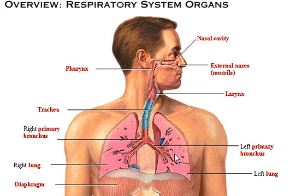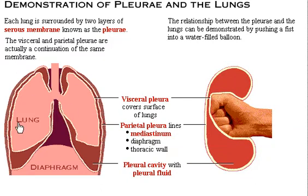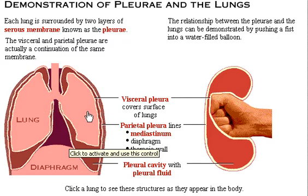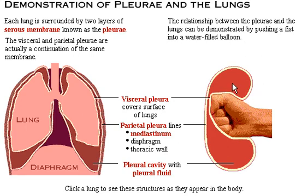We're going to look in a little bit more detail at what actually happens inside the lungs and how the gas exchange occurs. Here we're going to demonstrate the relationship of the pleura that surrounds the lungs. Each lung is surrounded by two layers of the serous membrane known as the pleura. We can demonstrate this relationship using a fist pushed against a water-filled balloon — the balloon represents the pleura, your fist represents the lungs, and the cavity contains fluid with two membranes.